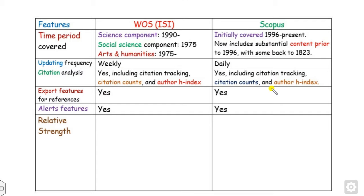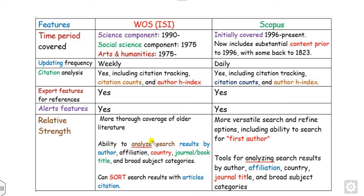What is the relative strength of Web of Science? You can see more coverage from older literature, you can analyze results by authors, affiliations, country or even journal titles, and you can sort articles based on article citations.